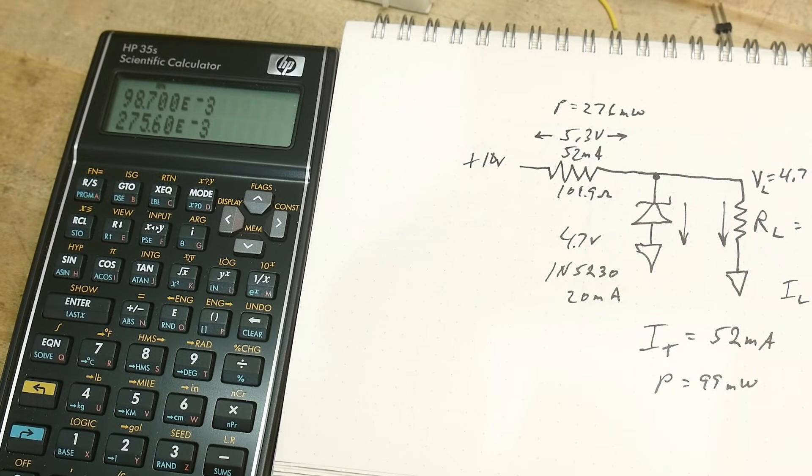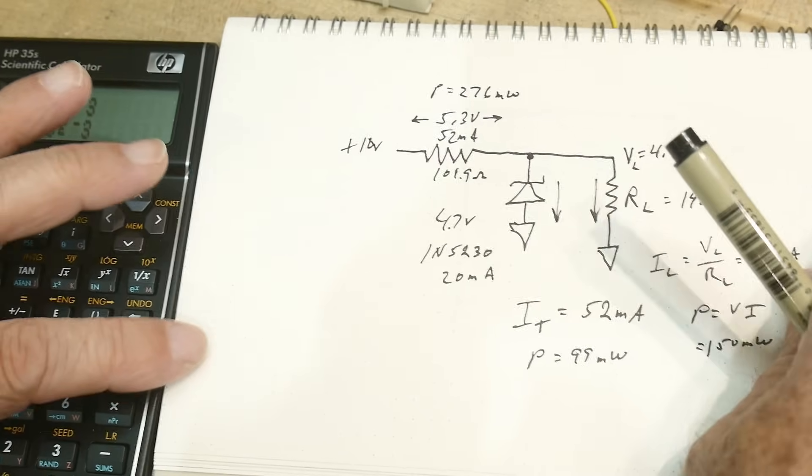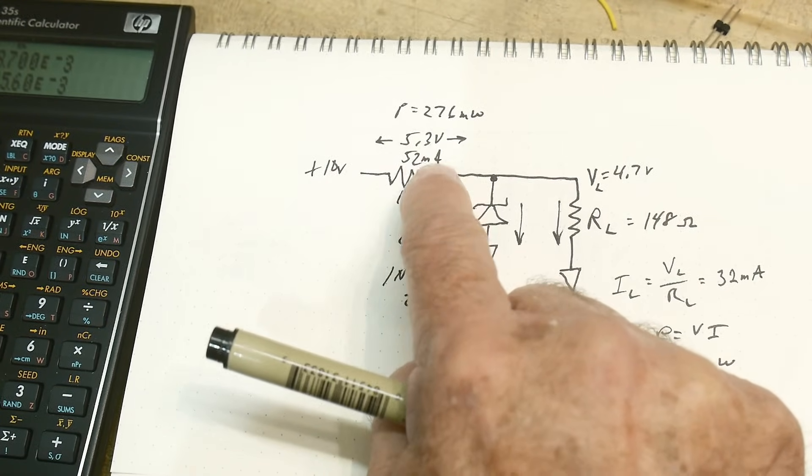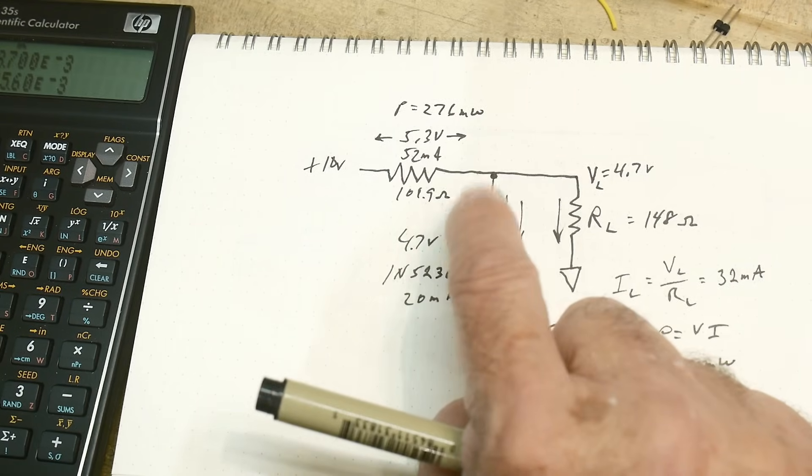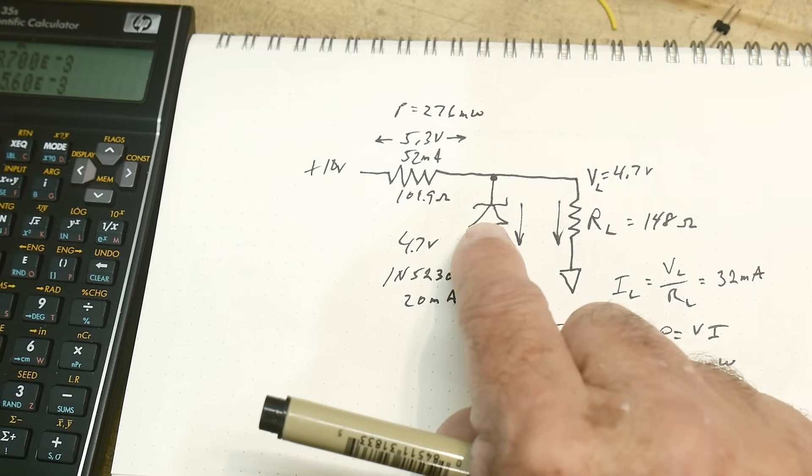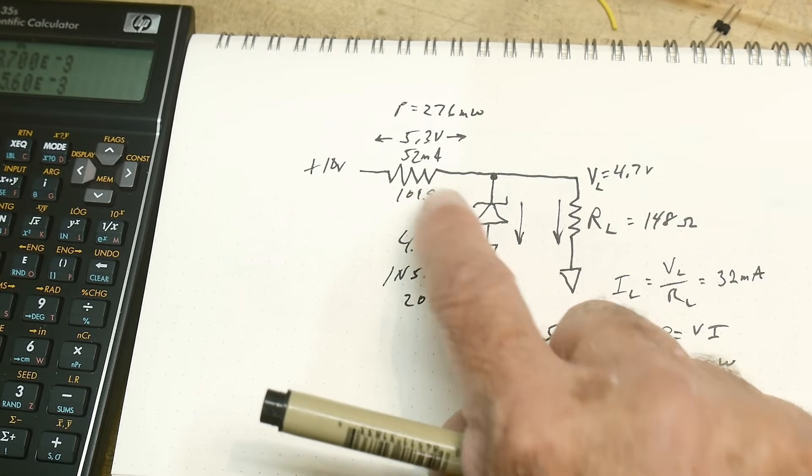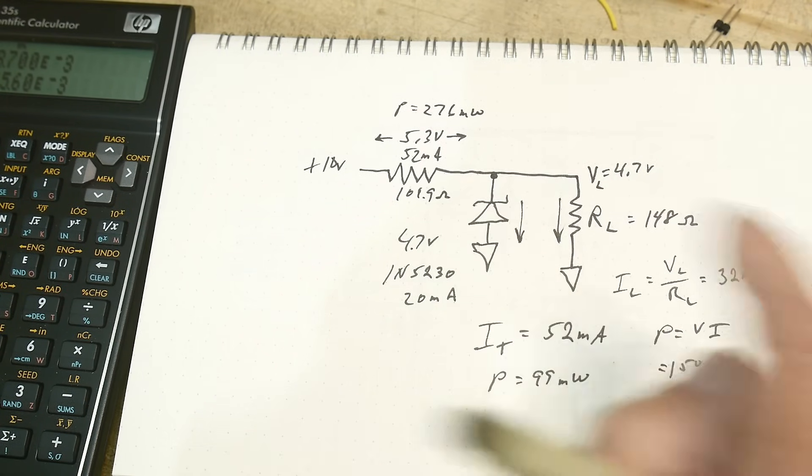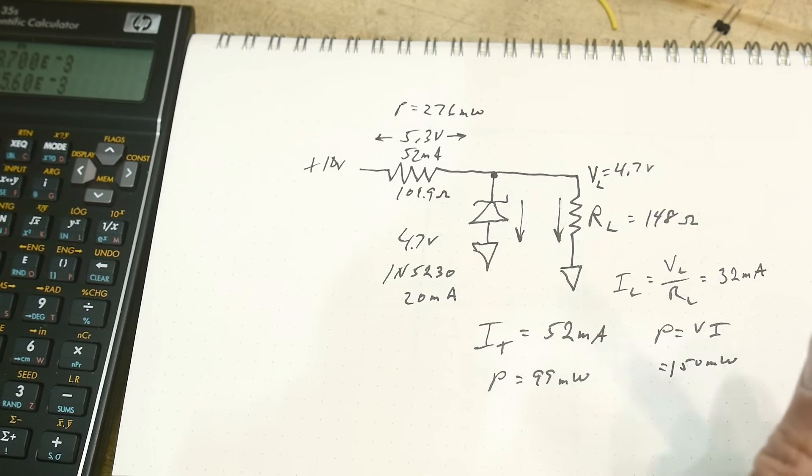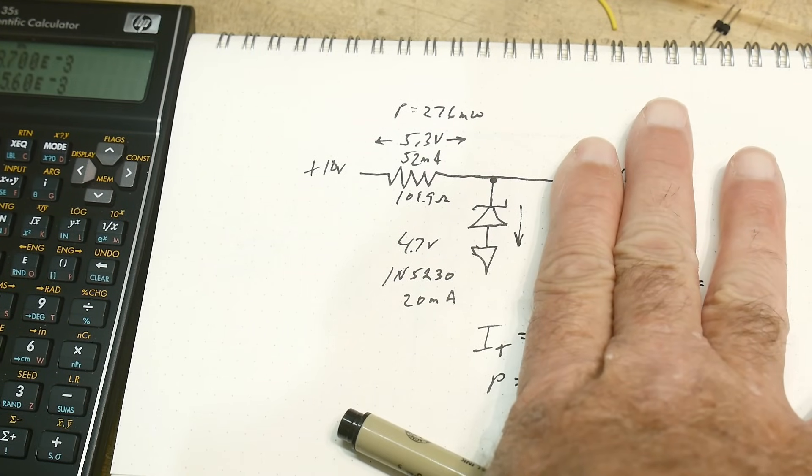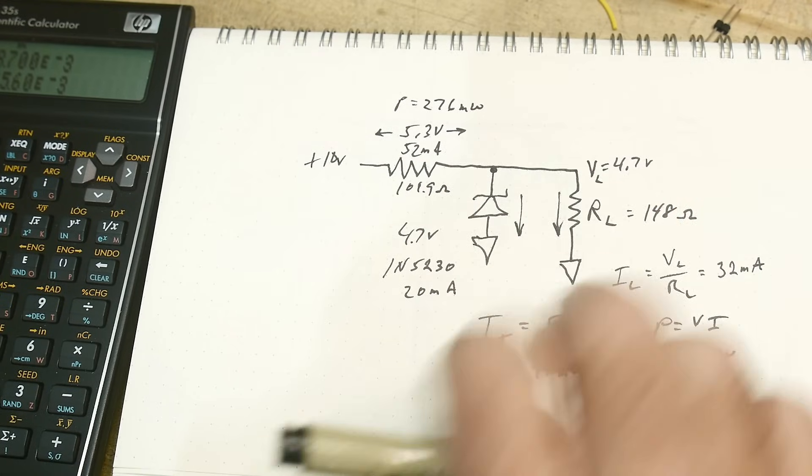Now that's where a lot of people get into trouble designing these zener diode power supplies. They don't have a large enough wattage resistor, or they don't have a large enough wattage zener diode. The zener diodes come in like one watt, two watt versions. A lot of times you have quite a bit of power in here.